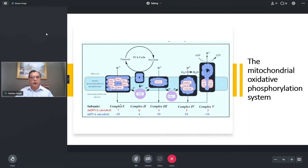And complex two is exclusively nuclear. And then the complex three, you have one subunit coming out of mitochondrial DNA. And complex four, three, and complex five, two subunits. And here you have subunits encoded by the nuclear DNA in context of the complex three and complex four and complex five around 14 subunits.